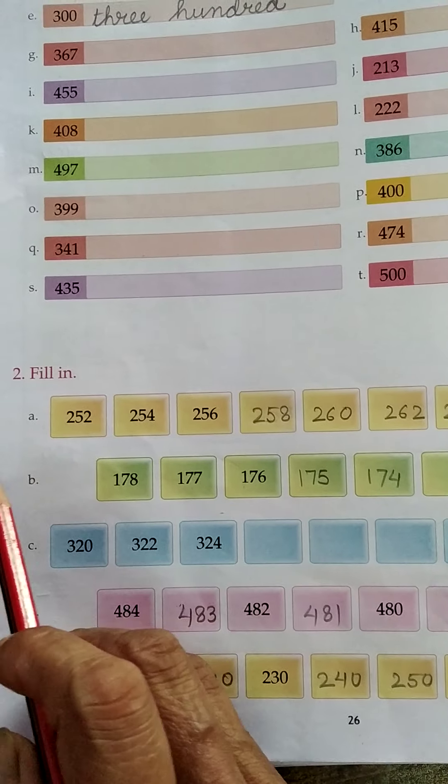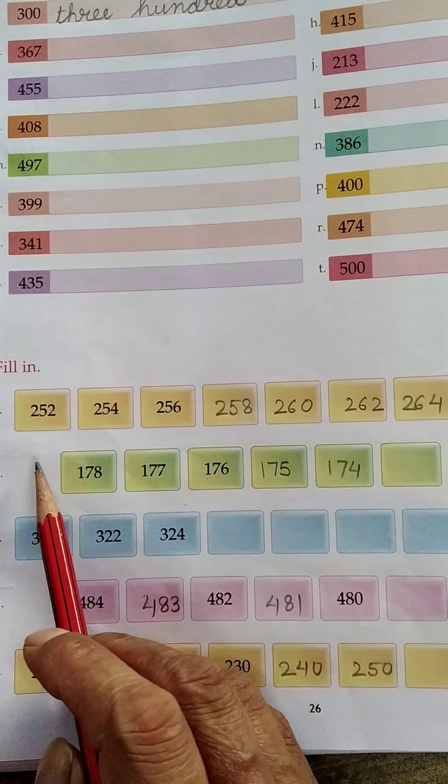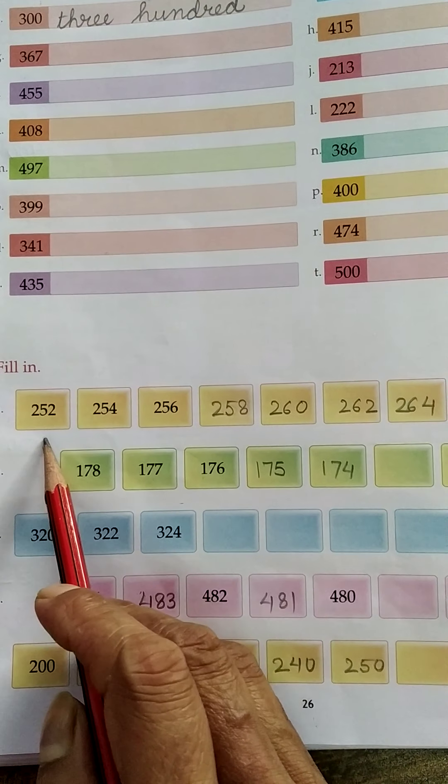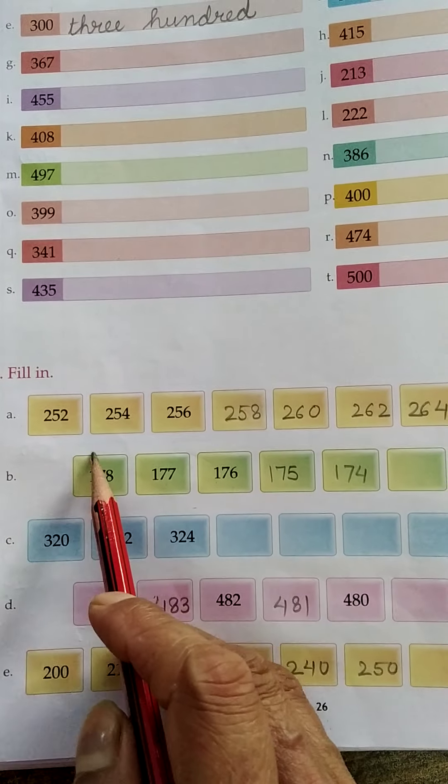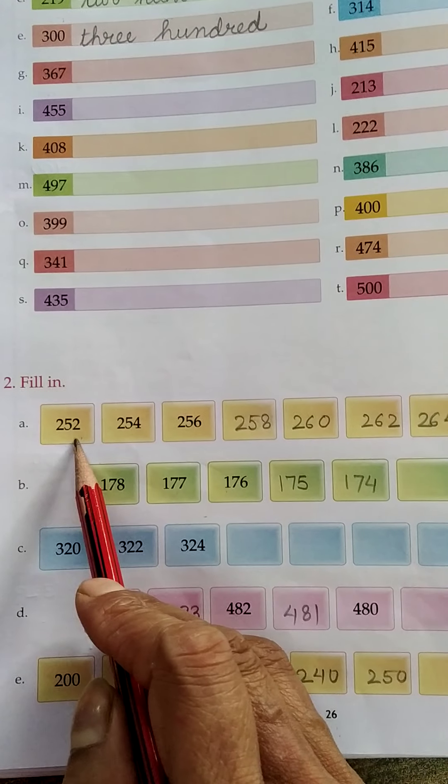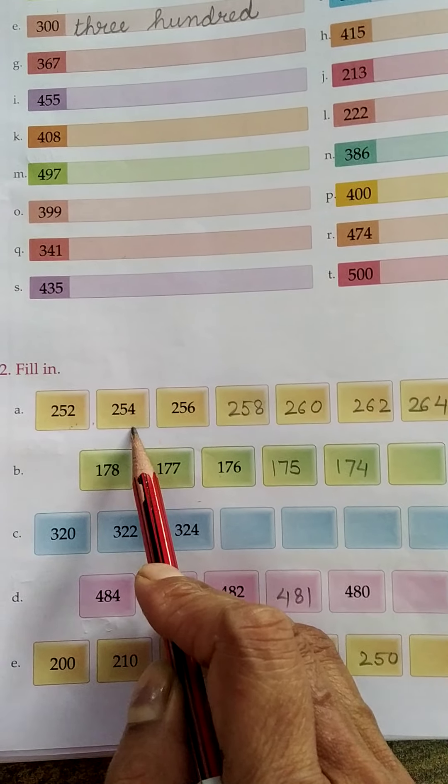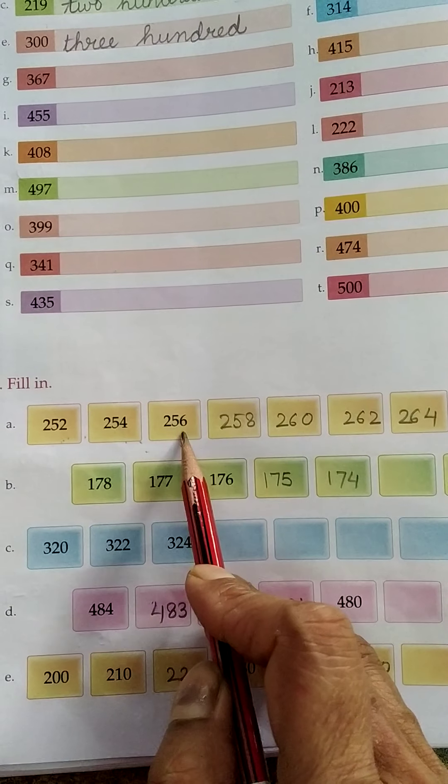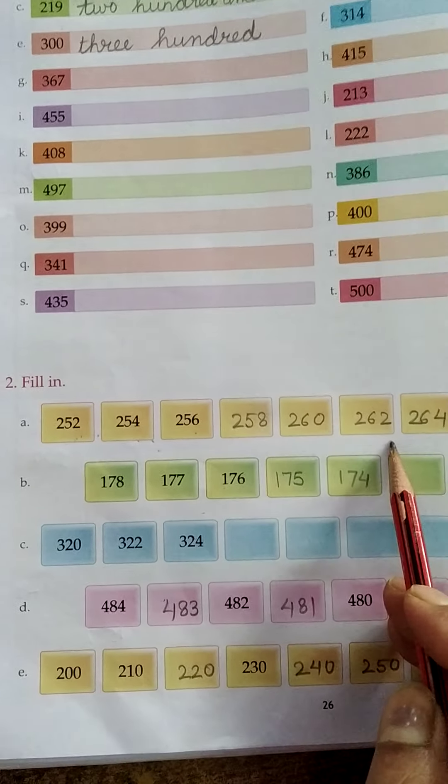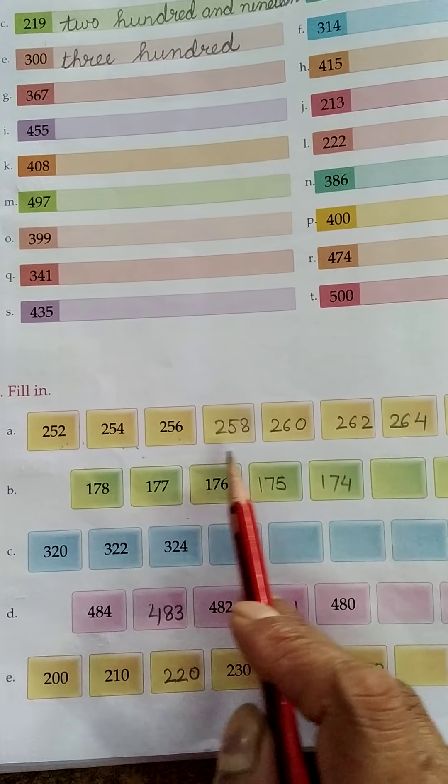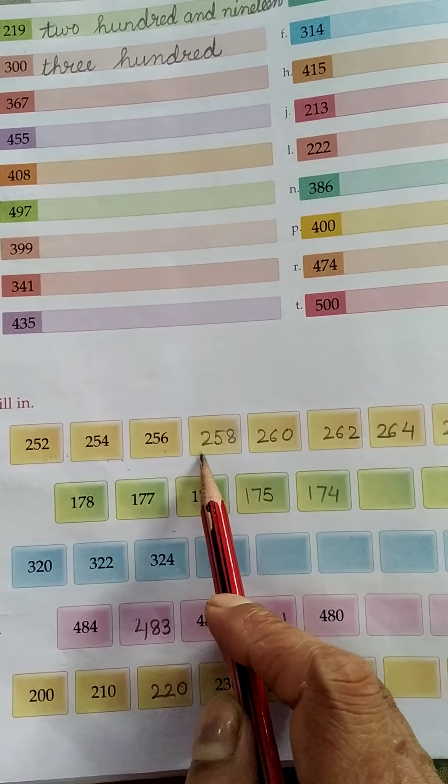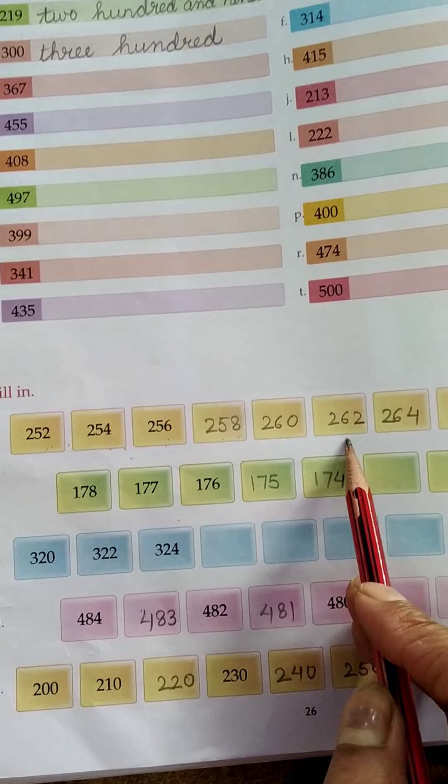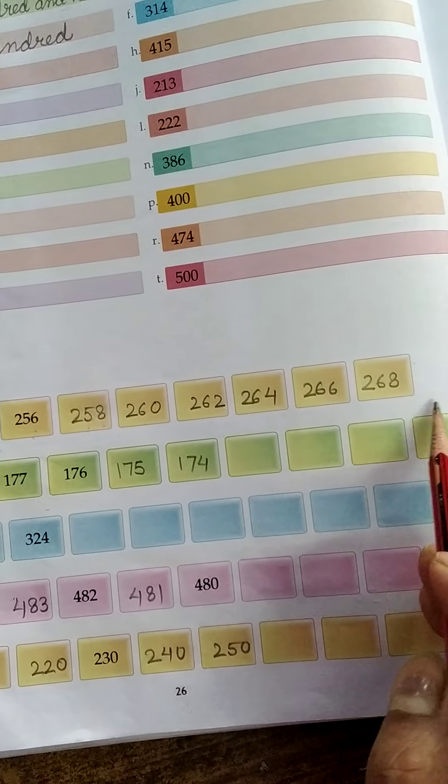Then this exercise, number 2. This is the series, the skip counting. 252, leave one number, then 254. Again you leave one number, then you write 256. These are the even numbers. All these numbers are even numbers: 258, 260, 62, 64 and so on.